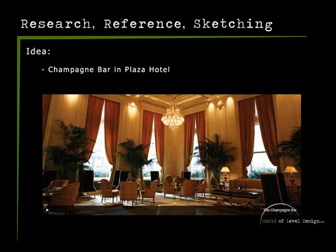So — research, reference, and sketching. My idea is a champagne bar in the Plaza Hotel. I researched quite a few environments and basic rooms, looked through a lot of interior design magazines and Architectural Digest, and found this environment and completely fell in love with it. It's a beautiful environment — a place I really want to go to. It's in New York City in Manhattan, and I found out it's $600 a night. It'd be a great place to stay — not yet, because I don't have that kind of money — but someday soon.